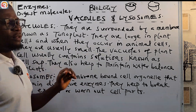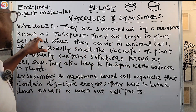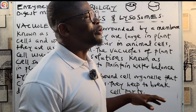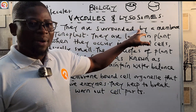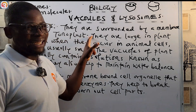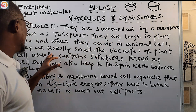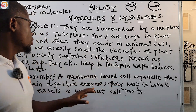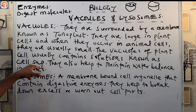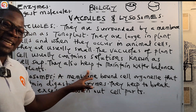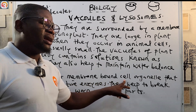Now let's go to the notes. Vacuoles are surrounded by a membrane called the tonoplast. They are large in plant cells, and when they occur in animal cells they are usually small. The vacuoles of plant cells usually contain a solution known as cell sap. Vacuoles also help to maintain water balance in plants.